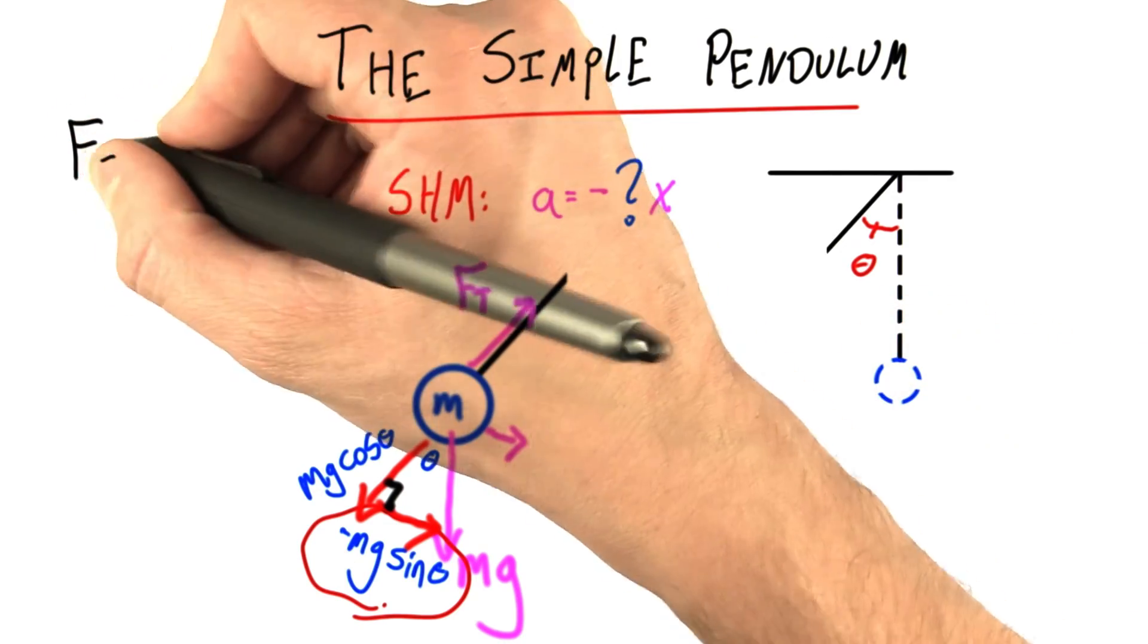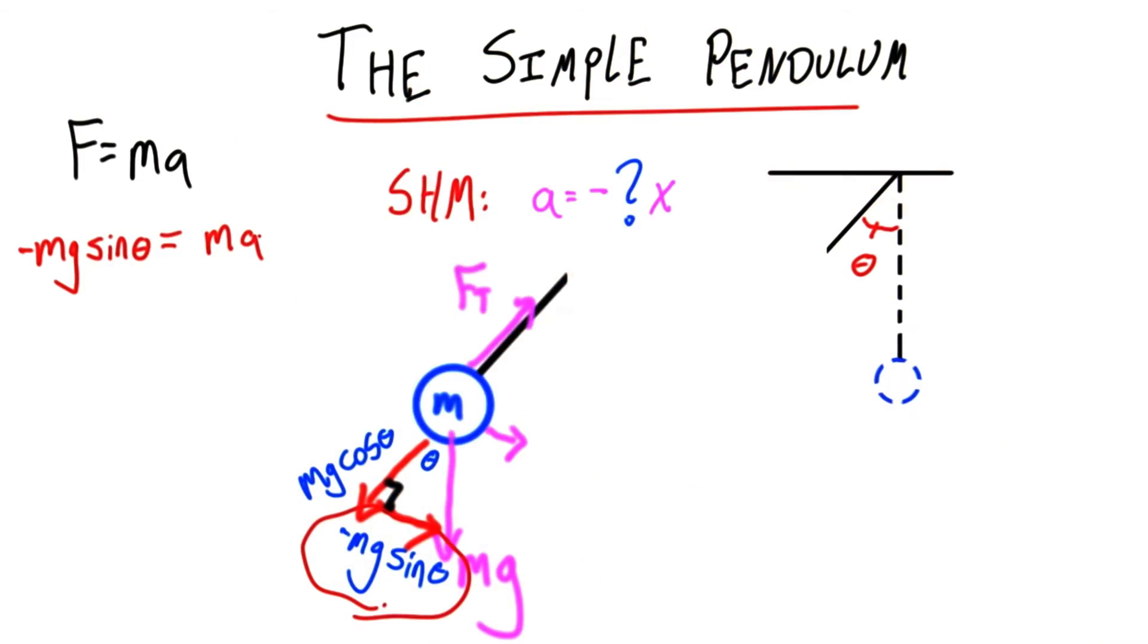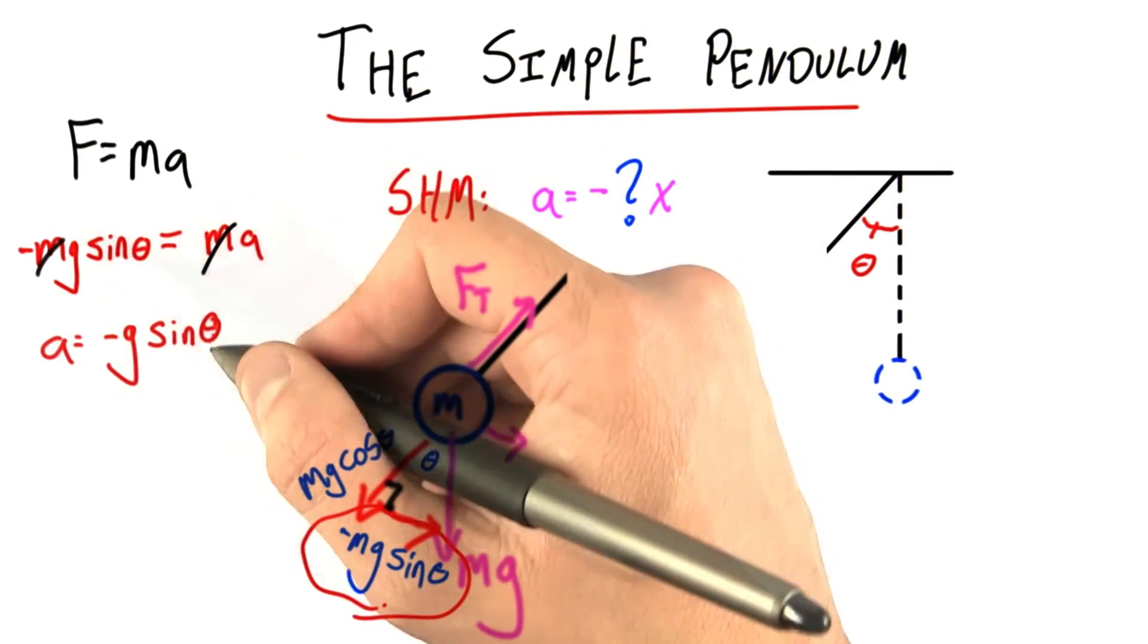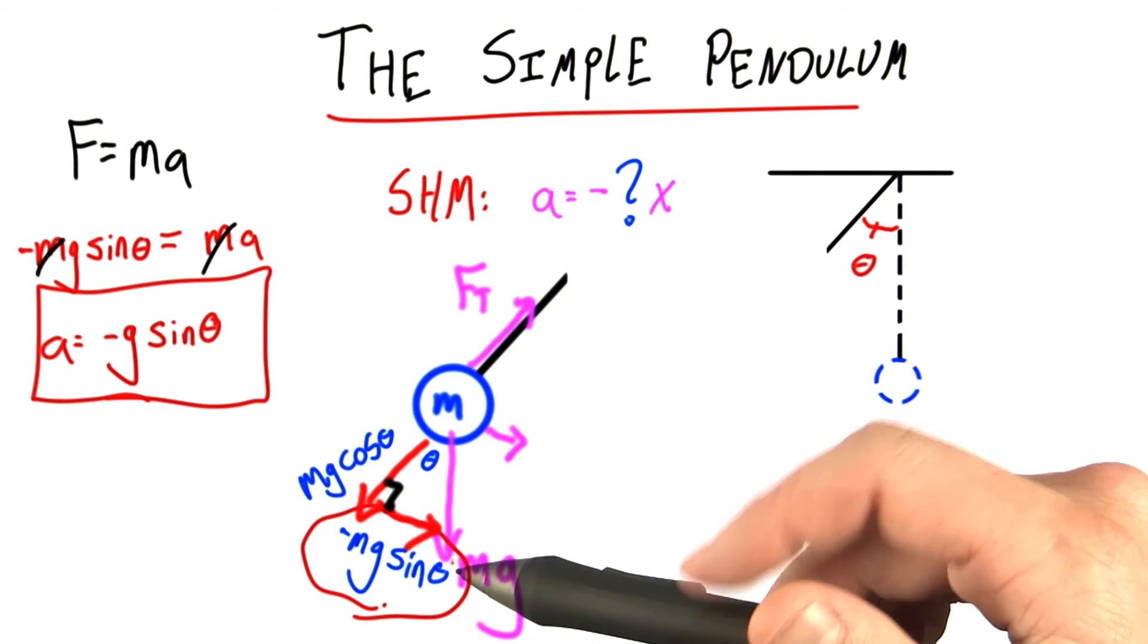Let's use our good old friend, F equals mA. In this case, minus mg sine theta equals mA. And check it out, the m's cancel, and we're left with this: the acceleration is equal to minus g times the sine of theta.